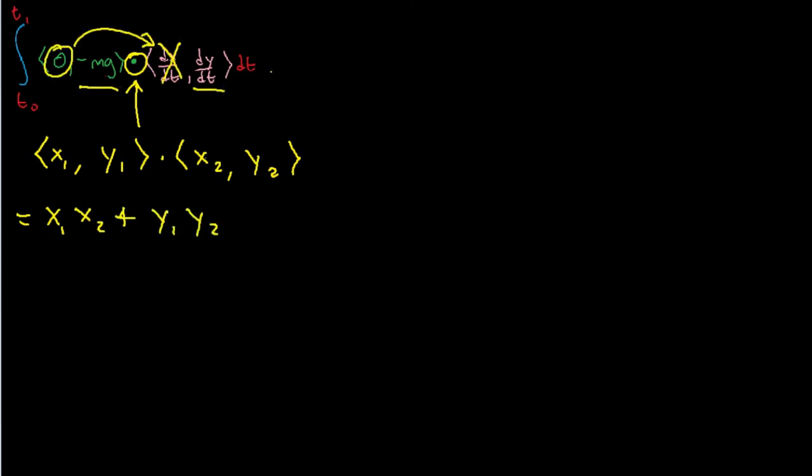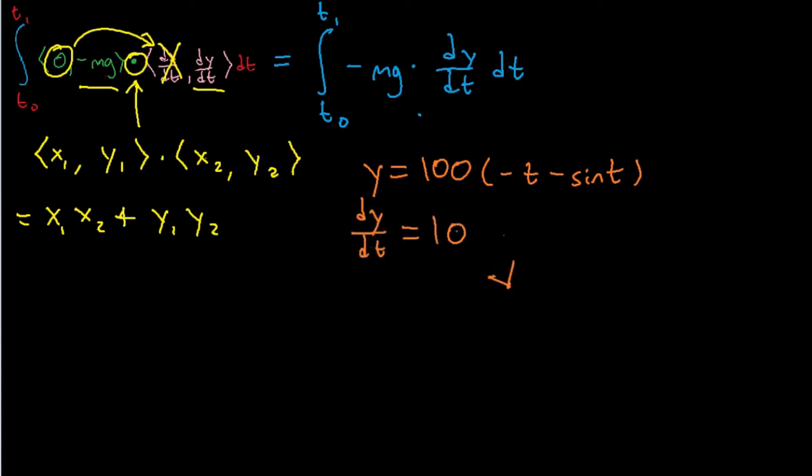Conveniently, since the x component of the force is 0, we only need to multiply the y components. It's given that y is equal to 100(-t - sin t). So to get dy/dt, just differentiate it and then plug and chug it into the integral.